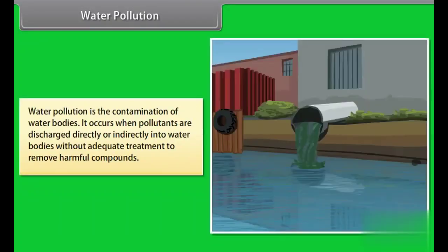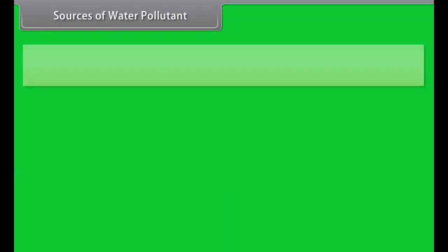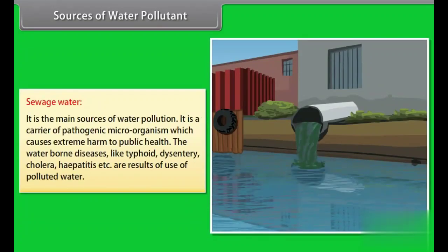Water pollution is the contamination of water bodies. It occurs when pollutants are discharged directly or indirectly into water bodies without adequate treatment to remove harmful compounds. Water pollution affects plants and organisms living in these bodies of water. Natural phenomena such as volcanoes, algae blooms, storms, and earthquakes also cause major changes in water quality and the ecological status of water. Sources of water pollutant: Sewage, industrial water, waste from houses, runoff water from agricultural lands, etc. contain biodegradable substance, which enhances bacterial activities. Thus, dissolved oxygen in water decreases.